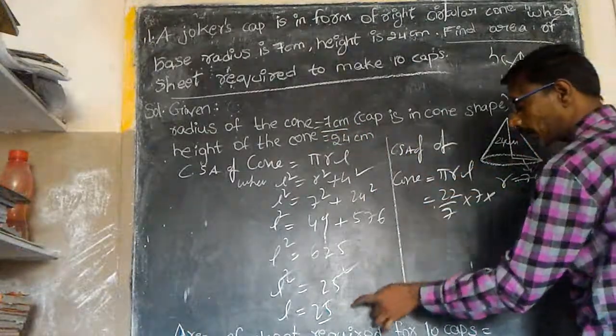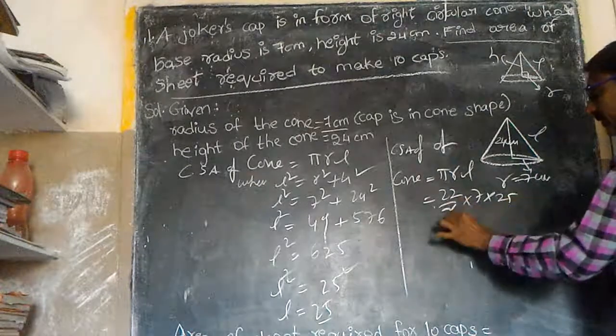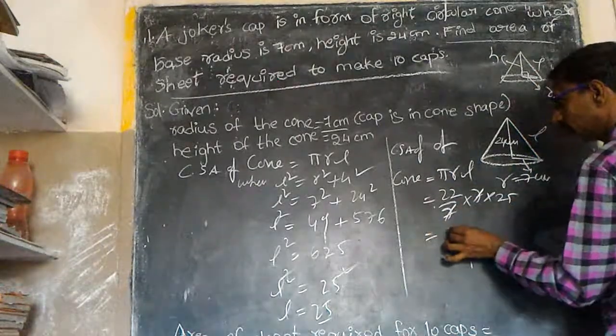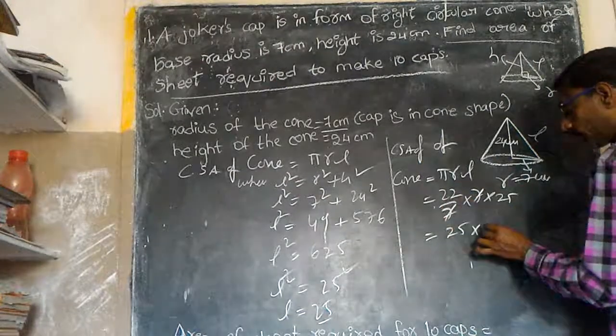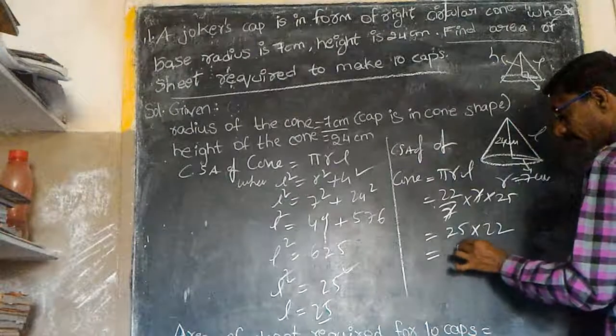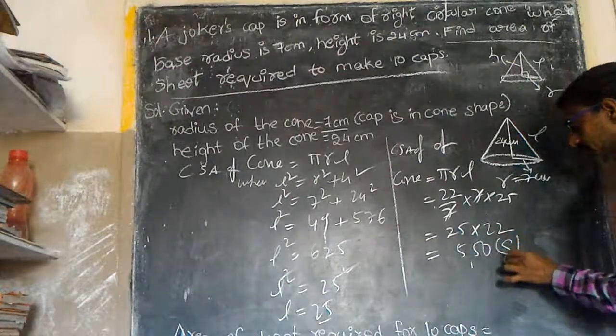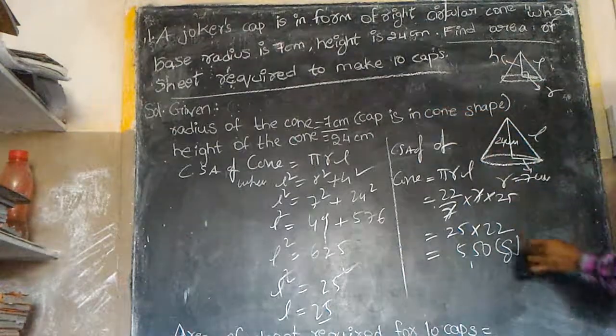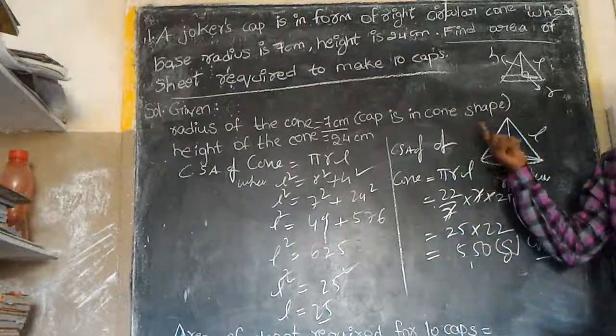7 cancels 7, so 22 multiply by 25 equals 550 square centimeters. This is one cap's curved surface area.